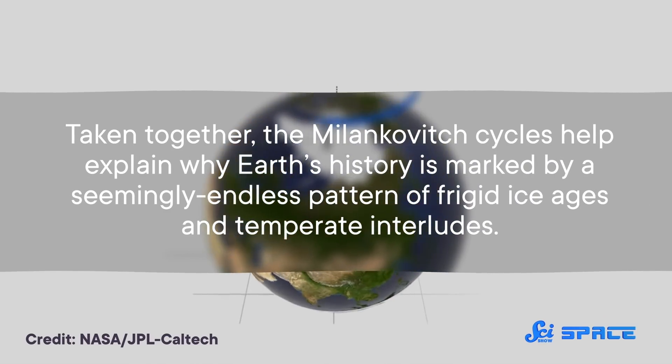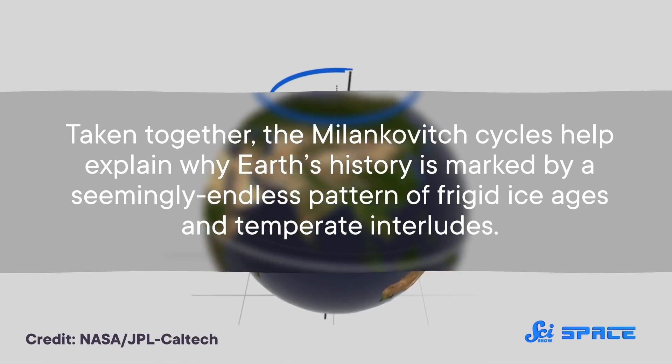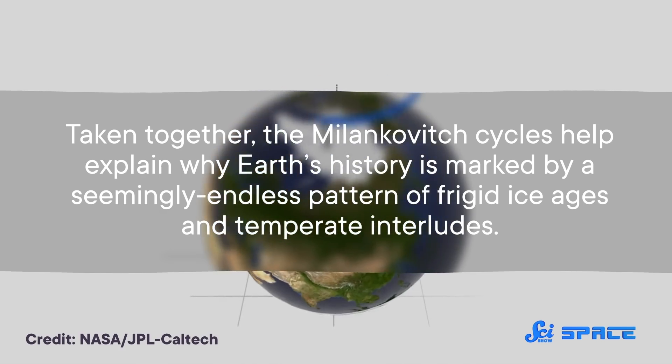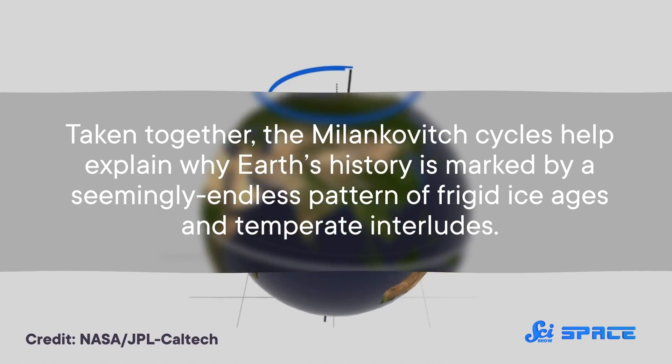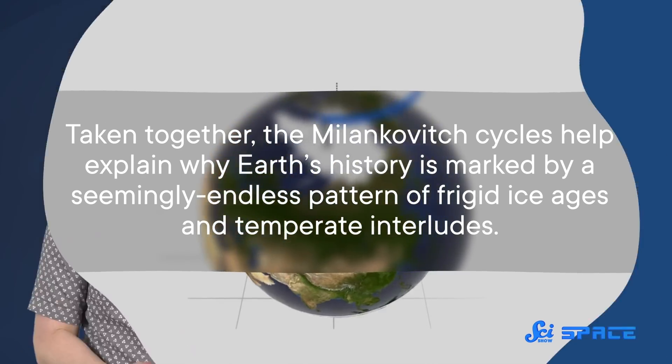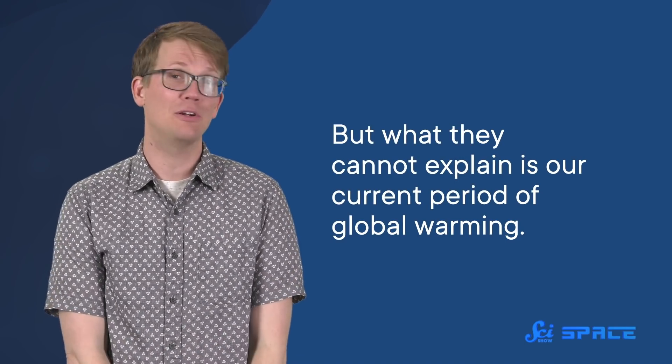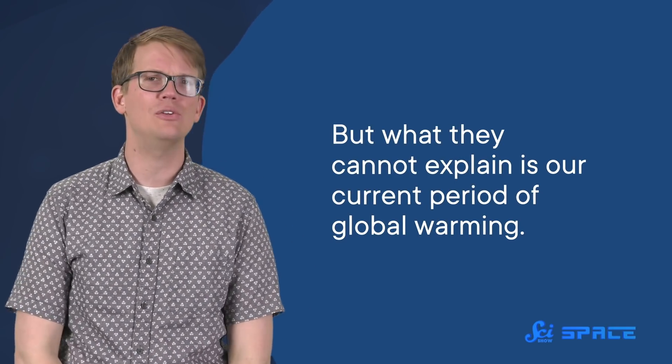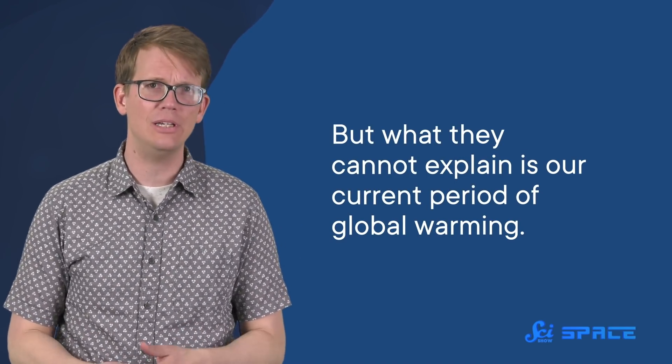Taken together, the Milankovitch cycles help explain why Earth's history is marked by a seemingly endless pattern of frigid ice ages and temperate interludes. But what they cannot explain is our current period of global warming. Remember, all of these cycles take tens of thousands of years to complete. A lot of the effects of climate change are being felt over a mere century or so, which is a blip on the Milankovitch timeline.